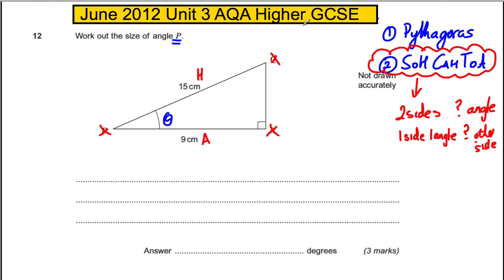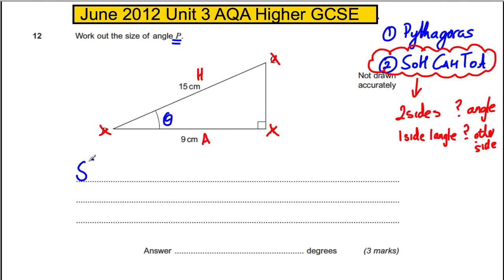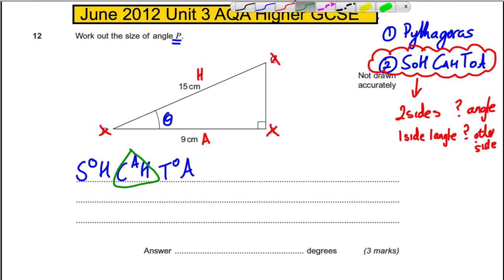We're going to ignore the opposite for now because we don't have it and know nothing about it. We only have the adjacent and the hypotenuse and want to work out the angle. What has A and H in it? SOH-CAH-TOA — which of these has the adjacent and hypotenuse? It's CAH.